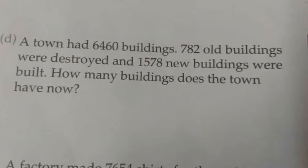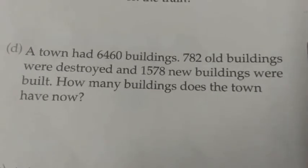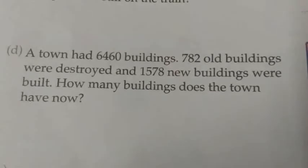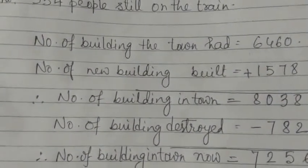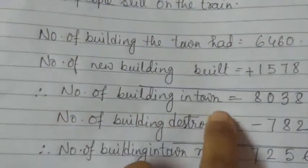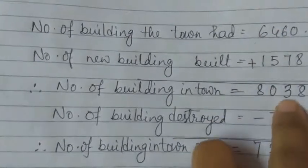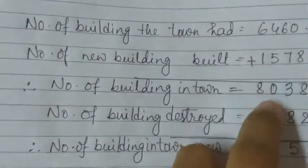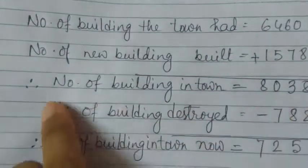Now come to number D. A town had 6,460 buildings. 782 old buildings were destroyed and 1,578 new buildings were built. How many buildings does the town have now? The number of buildings in the town is 6,460. Number of new buildings built is 1,578. Adding: 0 plus 8 is 8. 6 plus 7 is 13, write 3 here, 1 carry. 1 plus 4 is 5, 5 plus 5 is 10, write 0 here, 1 carry. 1 plus 6 is 7, 7 plus 1 is 8. So 8,038 buildings are now in the town.